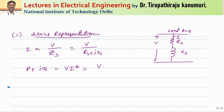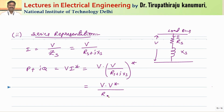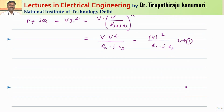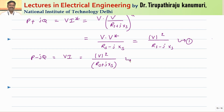So P plus jQ equals V times I conjugate, where I equals V divided by (rs + j·xs), so I must take the conjugate of the entire expression. This becomes V times V conjugate divided by (rs − j·xs), giving magnitude of V squared divided by (rs − j·xs) — call this Equation 1. Similarly, P minus jQ equals V times I (without conjugate), giving V squared divided by (rs + j·xs) — call this Equation 2.